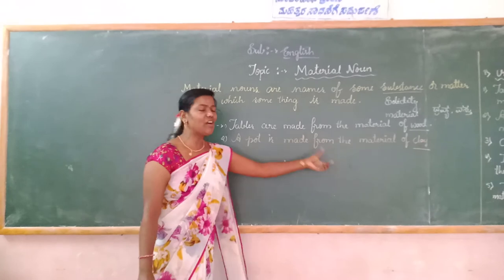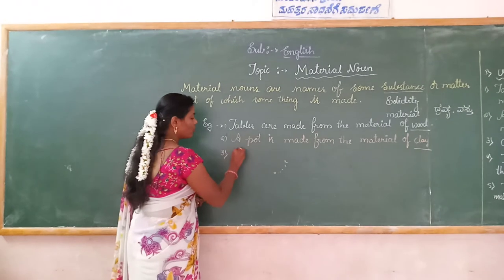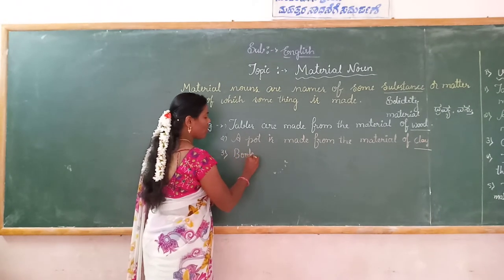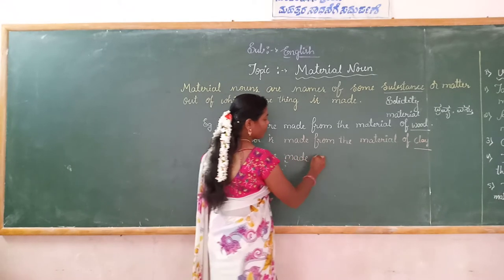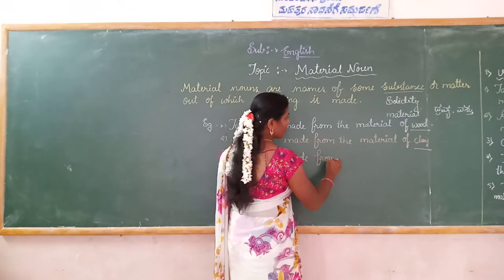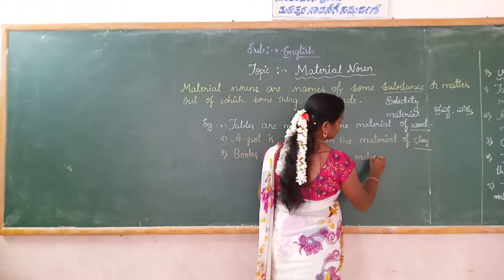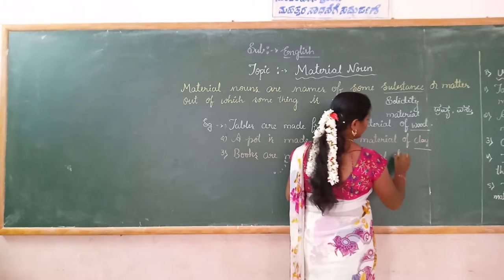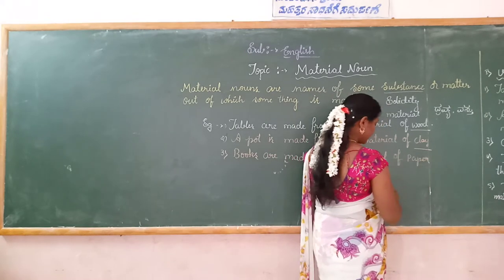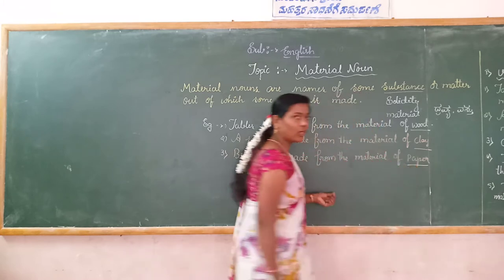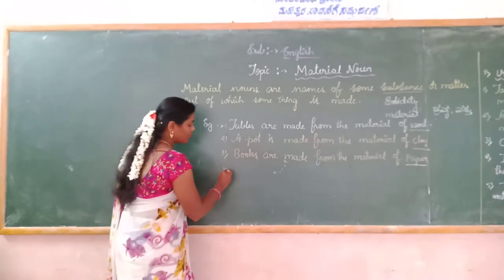By using this clay, we make a pot. And the third one: books are made from the material of paper. Paper is the material. By using this paper, we make a book.